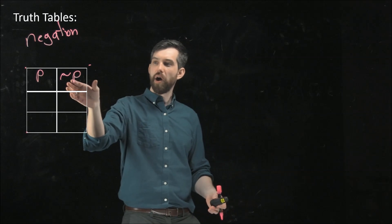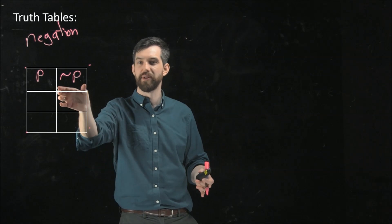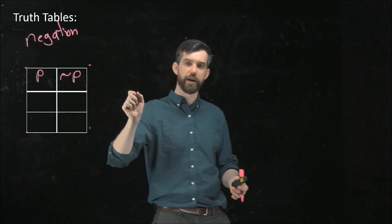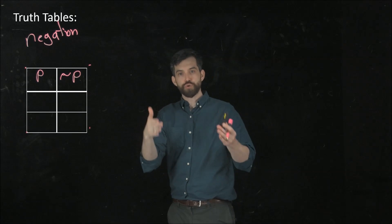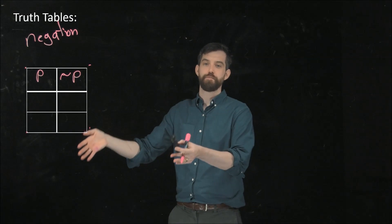But then on the right-hand side, I'm going to write my outcome, my combined statement. In this case, it's not p. It's negation. And then the truth or falseness of not p depends on the truth or falseness of p.